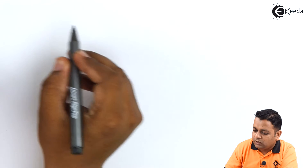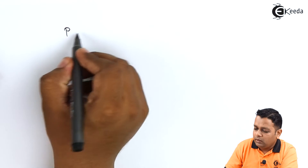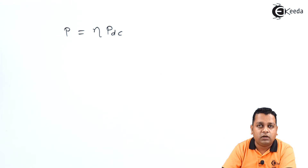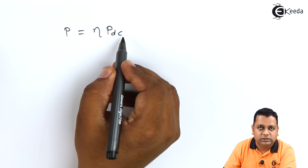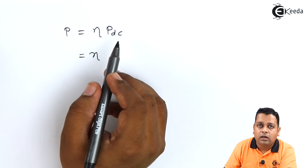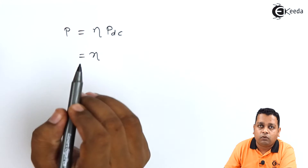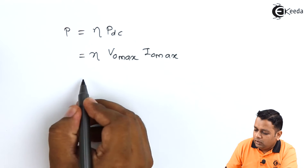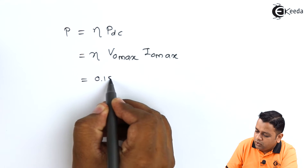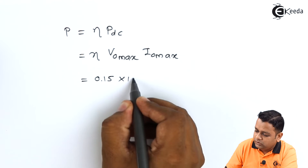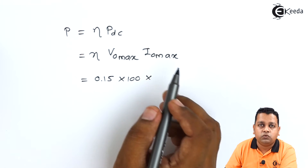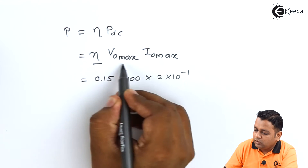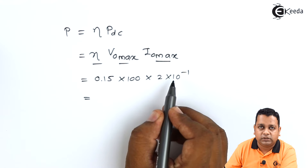For Part (a), the maximum CW output power P is computed using: P = η × P_dc, where P_dc is the DC input power. This expands to P = η × V0_max × I0_max. Substituting: P = 0.15 × 100 volts × 2 × 10^−1 amperes.